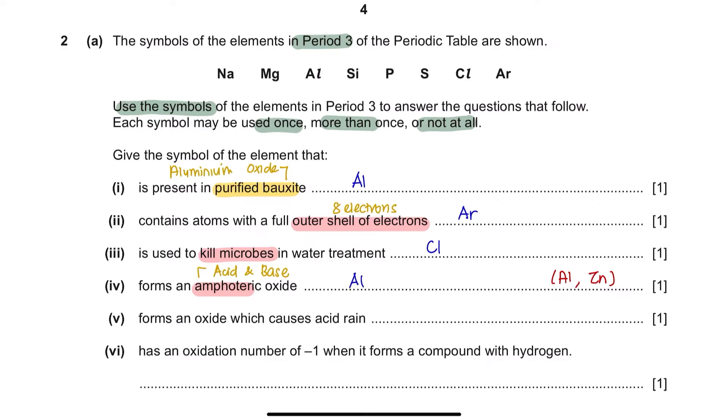Part 5. Forms an oxide which causes acid rain. Acid rain forms when oxides of nitrogen or sulfur dioxide in air mixes with rain. So, the answer here would be sulfur. And lastly, has an oxidation number of negative 1 when it forms a compound with hydrogen. Meaning that this element has accepted 1 electron to achieve its octet state. So, this would be chlorine.